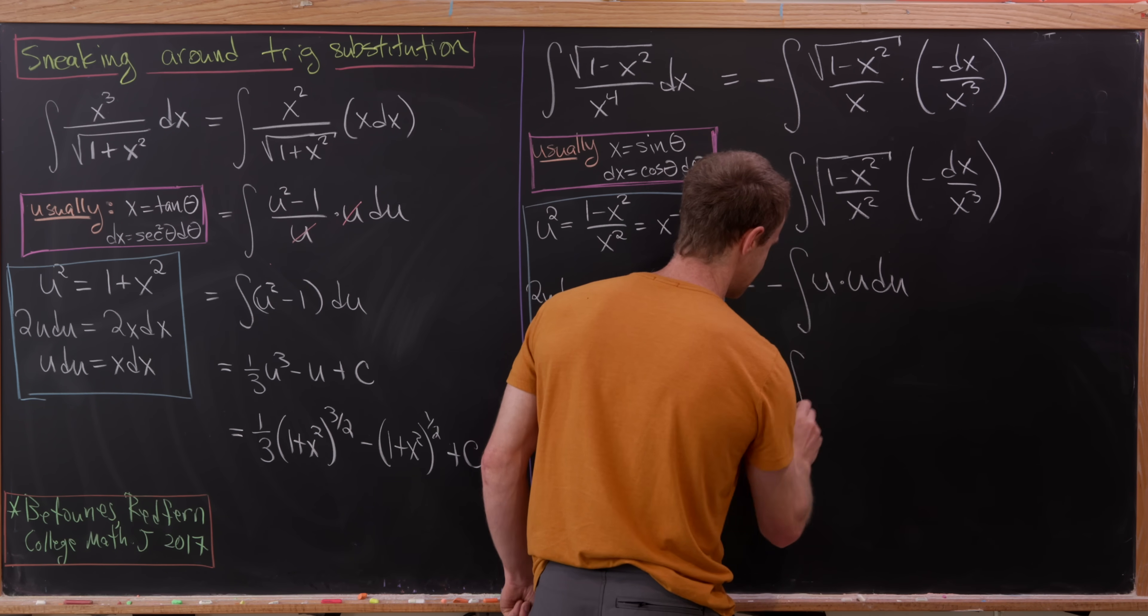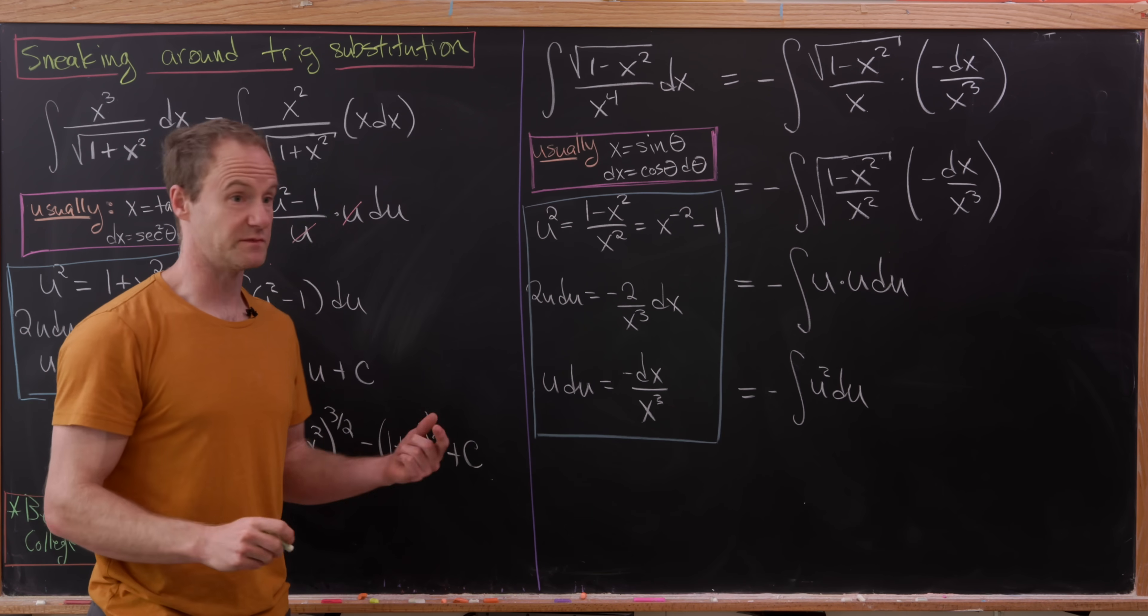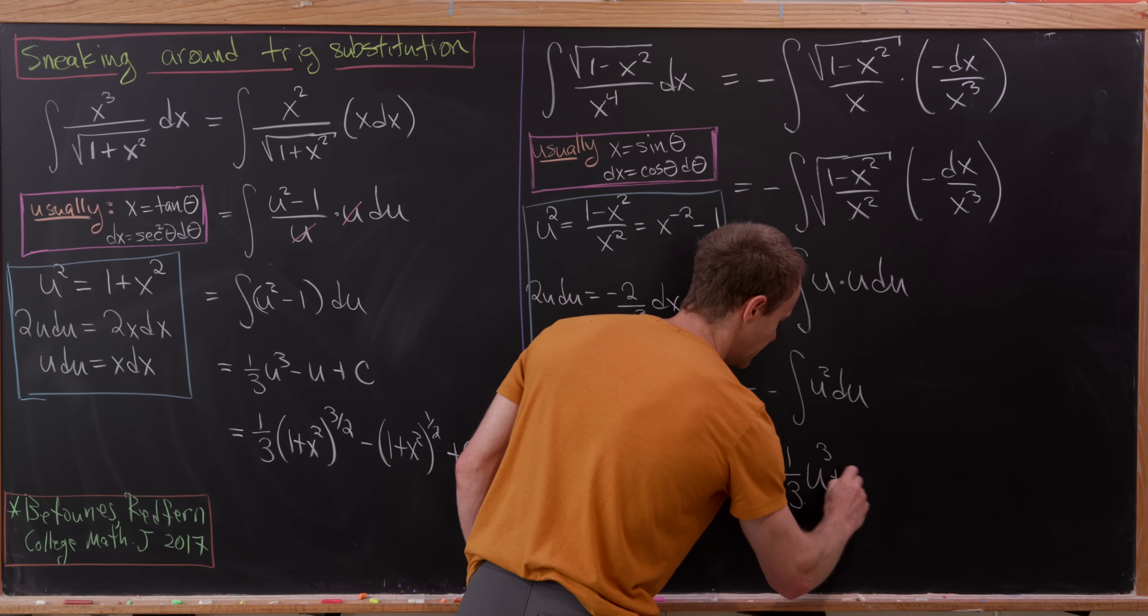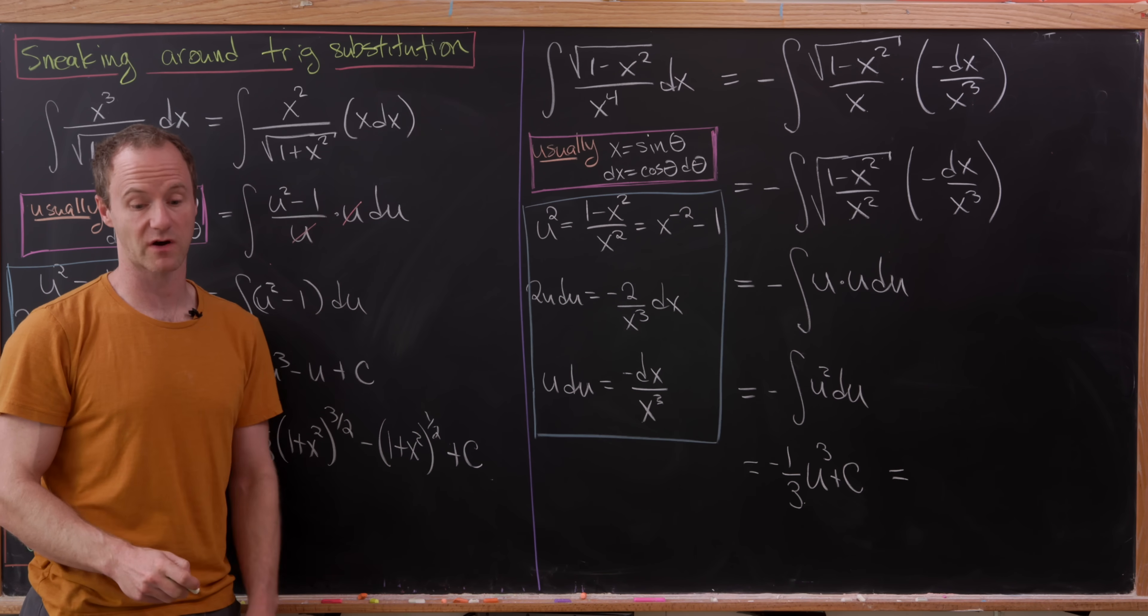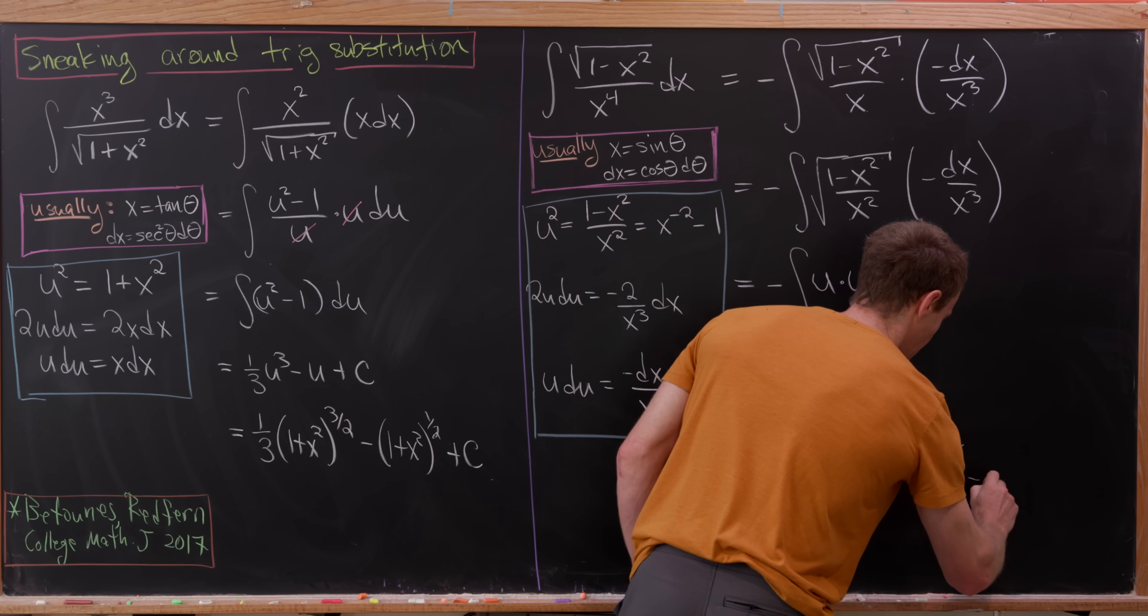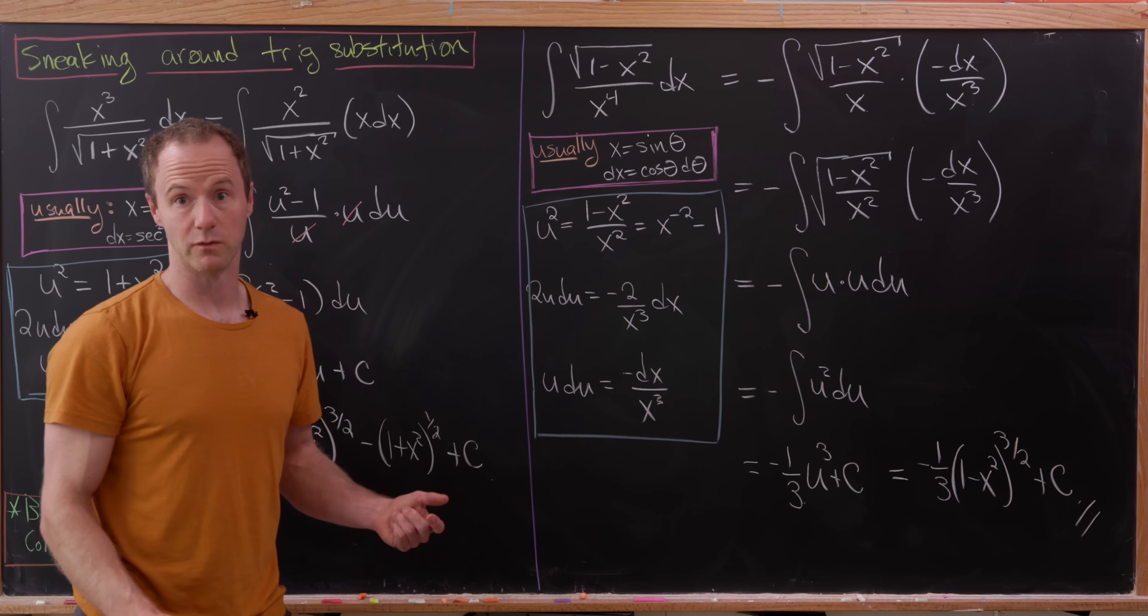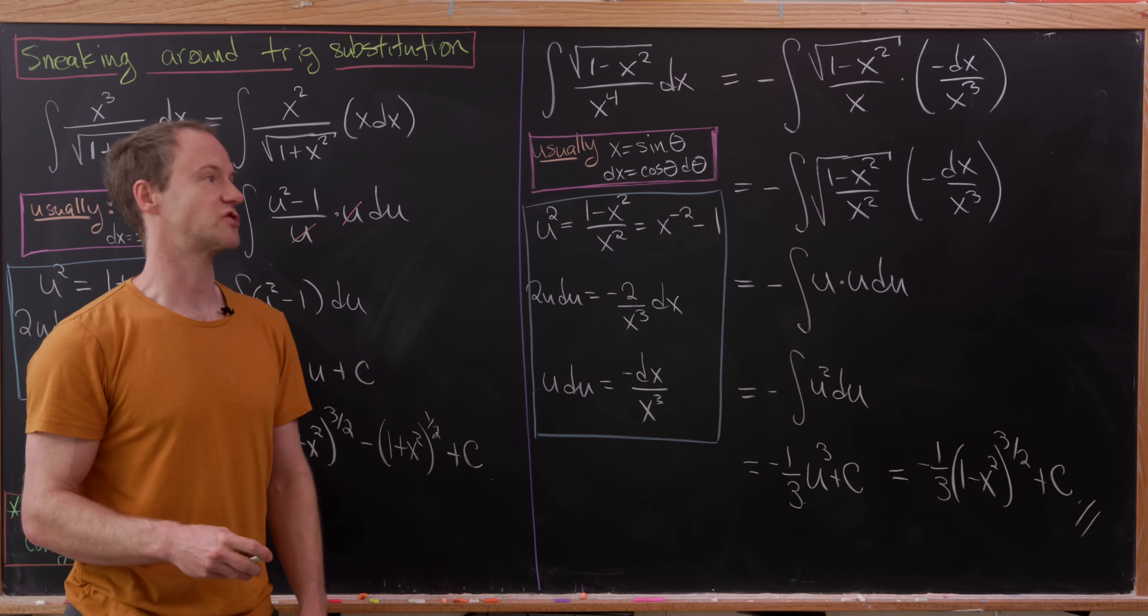In other words, we have minus the antiderivative of u squared du. But that's a pretty straightforward antiderivative. That's going to give us minus 1 third u cubed plus a constant. And then, of course, we can substitute back in for our original variable. And we'll have minus 1 third 1 minus x squared to the 3 halves plus a constant. And there you have it. We've solved or evaluated this integral without doing any sort of trig substitution.